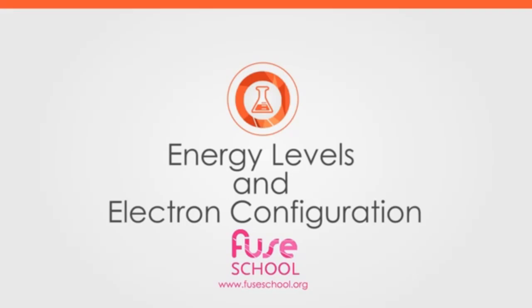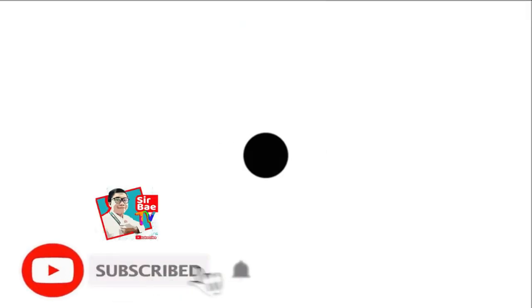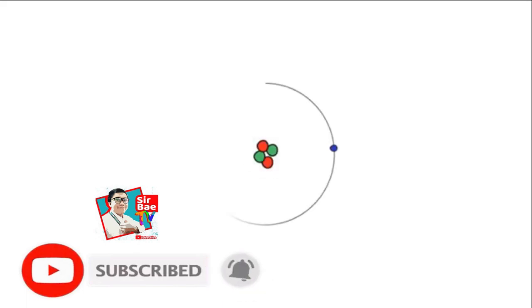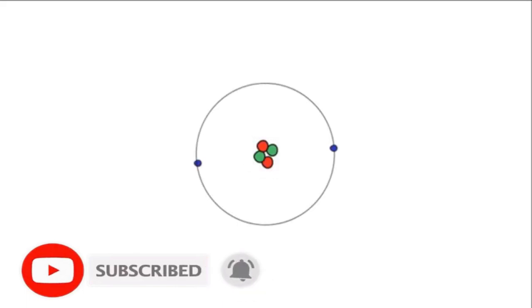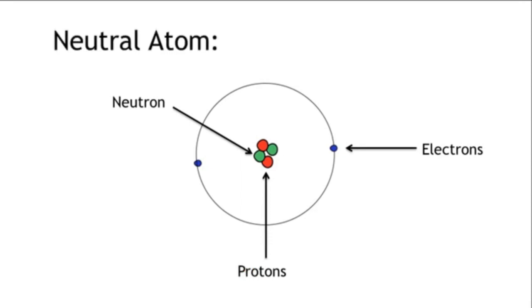In a previous video, we learnt that the nucleus is at the centre of an atom, and that it is made up of protons and neutrons. And around this central point, we find the electrons. We also know that in a neutral atom, the number of electrons is always equal to the number of protons.